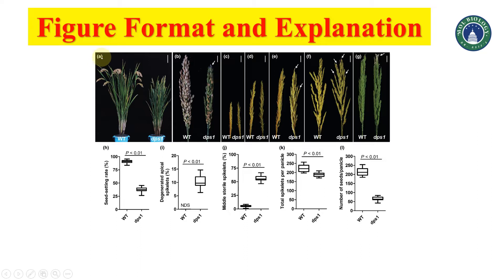Usually some journals require panel names in small letters and some require capital letters, so make your figures editable — for example in PowerPoint — so you can change the letters later according to the requirement. All figure panels that have a flow of relevant information should be placed together. In this example, panels A to G all have phenotypic data, and panels H to I have phenotypic data presented in the form of graphs.